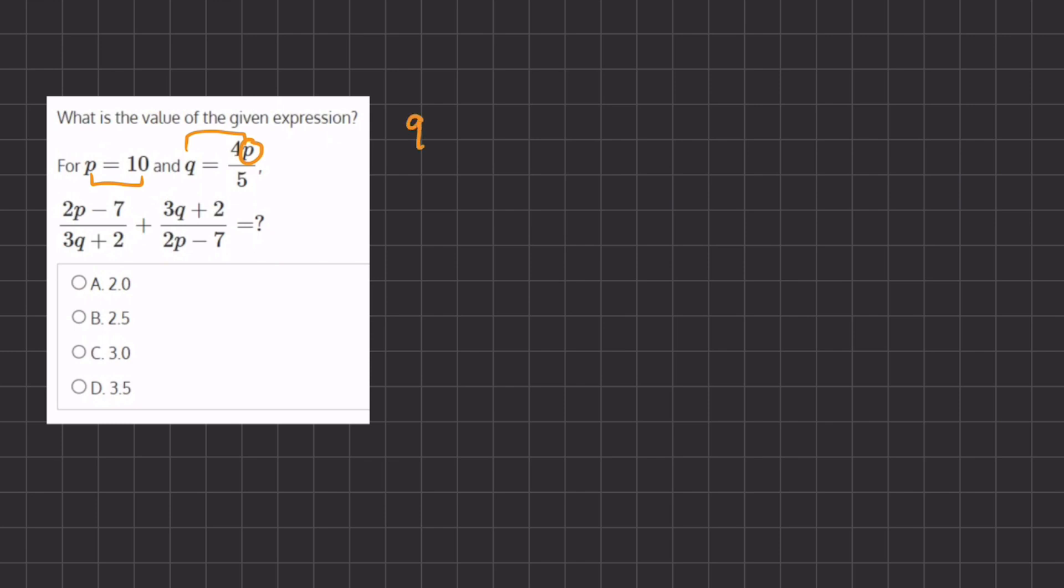So we have q equals 4 times p, which is 10, divided by 5. So we have 4 times 10, which is 40, divided by 5, which gives us 8. So the value of q is going to be 8, and the value of p is 10.